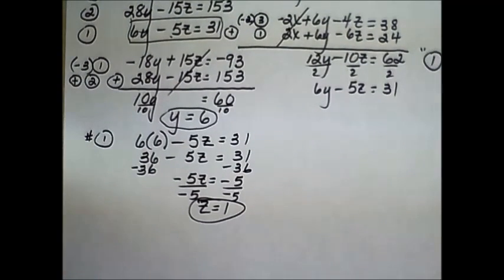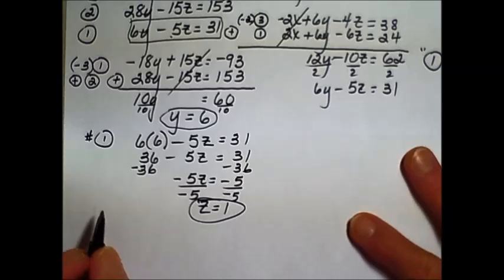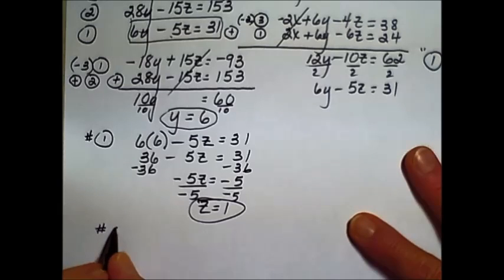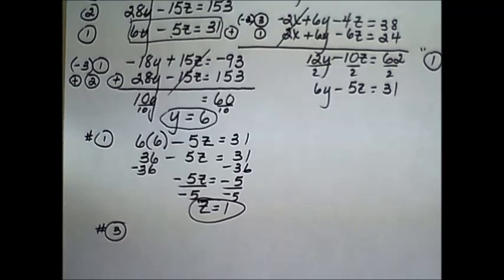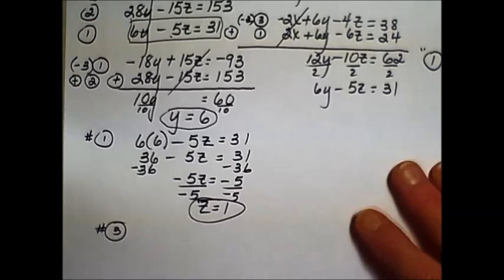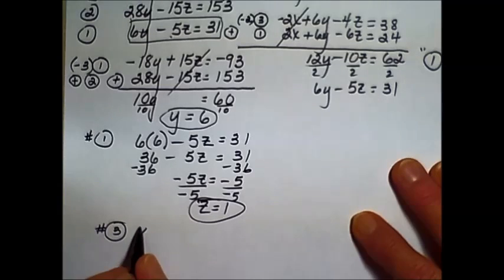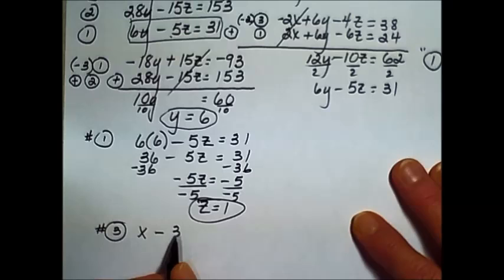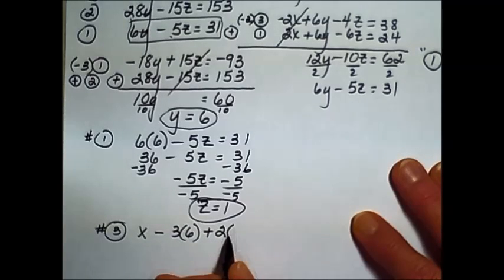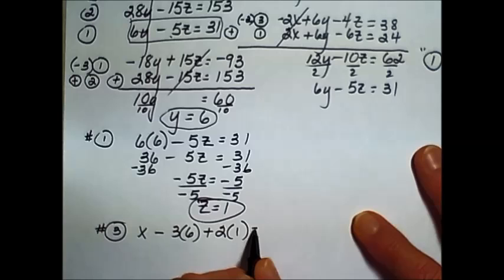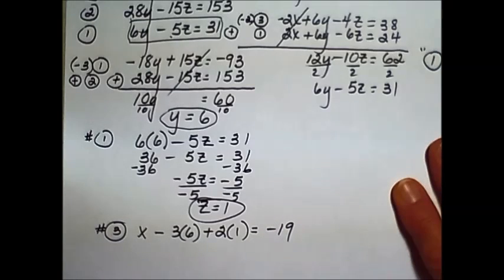We now have two of the three, and you can choose any one of the equations that you want. I'm going to go to equation number three, it seems to have the smallest numbers perhaps, and replace the variables. So we have x minus 3 times y, which we found to be 6, plus 2 times z, we've solved and found it equal to 1, and the equation says that that results in a negative 19.